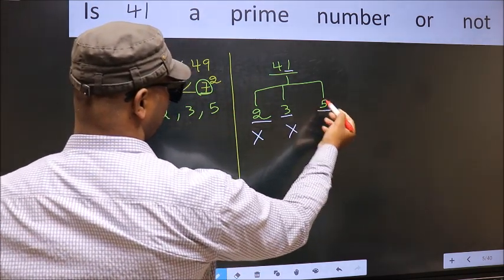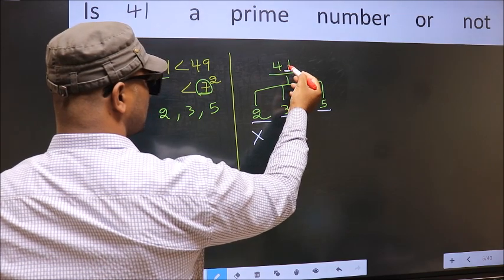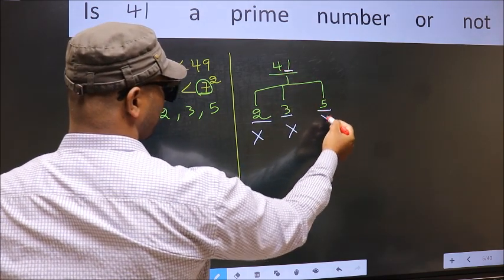Next number 5. Last digit is neither 0 nor 5, so this is not divisible by 5.